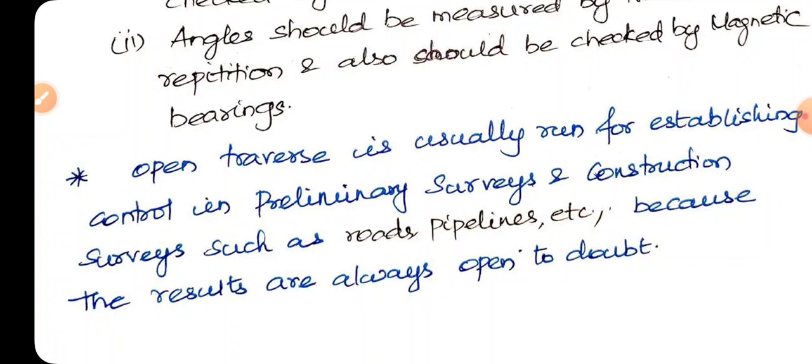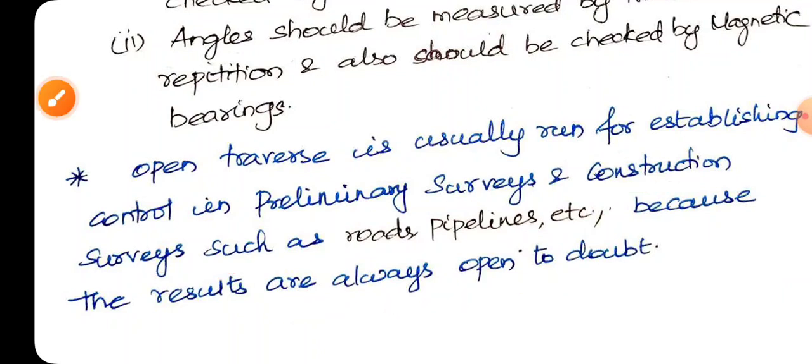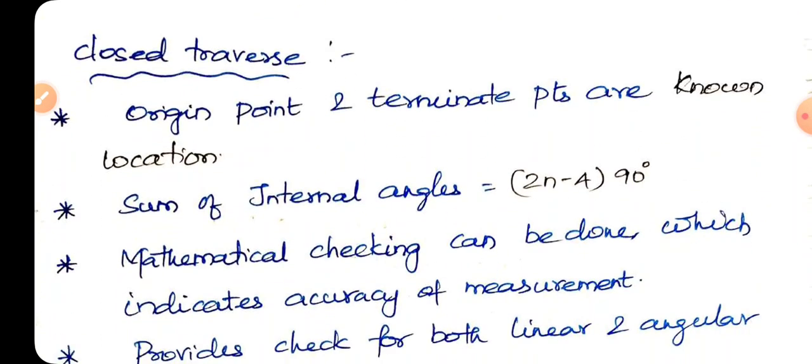Open traverse is usually run for establishing control in preliminary surveys and construction surveys such as road, pipelines, etc. Mainly in preliminary service use because the results are always open to doubt.